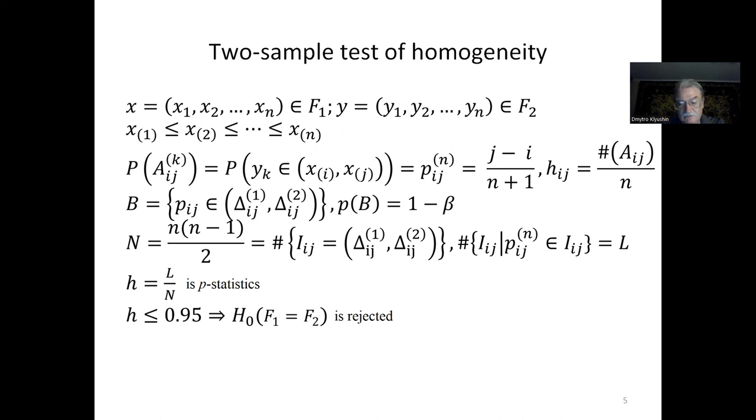...the probability that an element of sample y is greater than the i-th order statistic and less than the j-th order statistic, where i is less than j, is equal to (j-i)/(n+1). Let us refer to it as an expected probability.